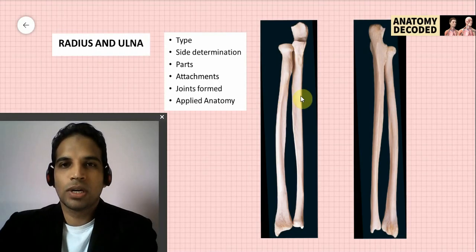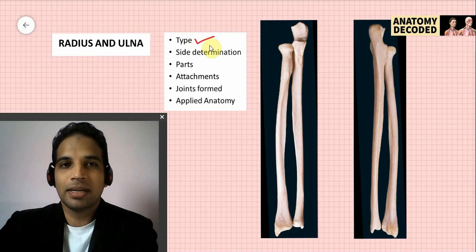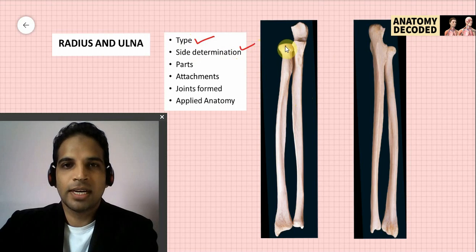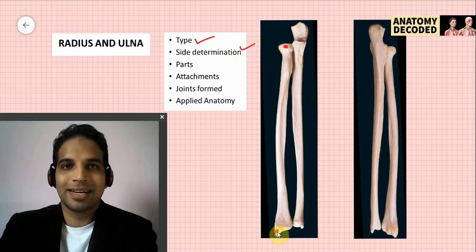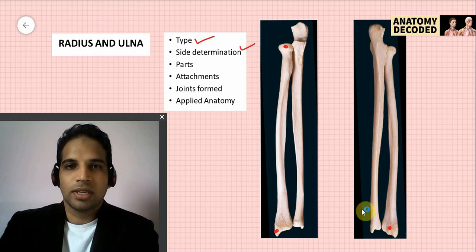Radius is the lateral bone of the forearm; ulna is the medial bone. Both are examples of typical long bones. For side determination of the radius: the head is on the superior aspect, the styloid process of the radius is on the lateral aspect, and the dorsal tubercle of Lister is on the posterior aspect.